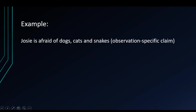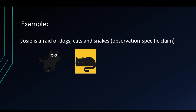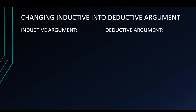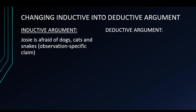Let's see another example. Josie is afraid of dogs, cats, and snakes. Therefore, Josie is afraid of all animals. As you can tell, most inductive reasoning conclusions cannot be proven with certainty. Some of them are at most probable, and a lot of them need more data to support the truth of the conclusion.